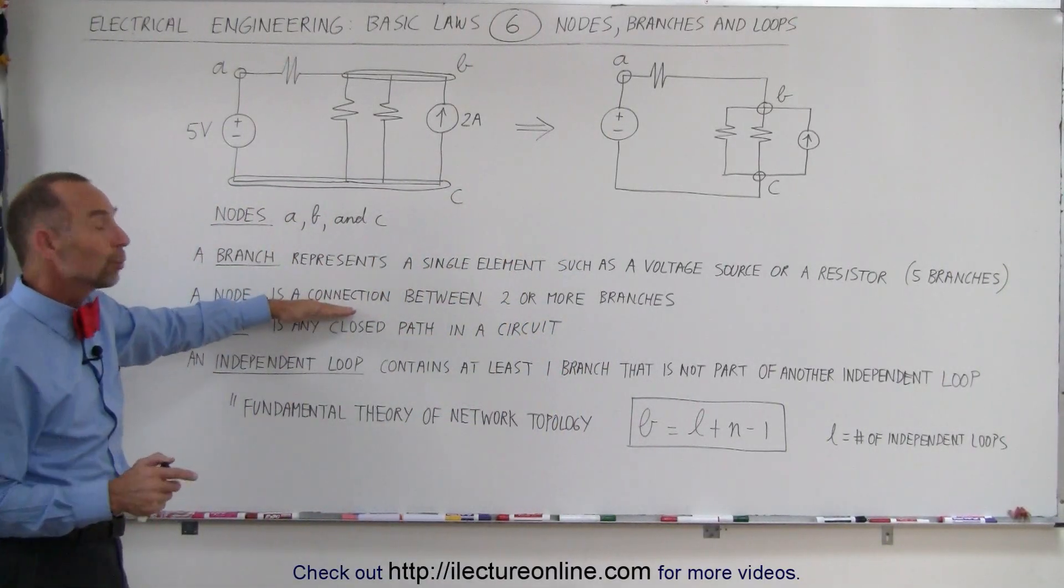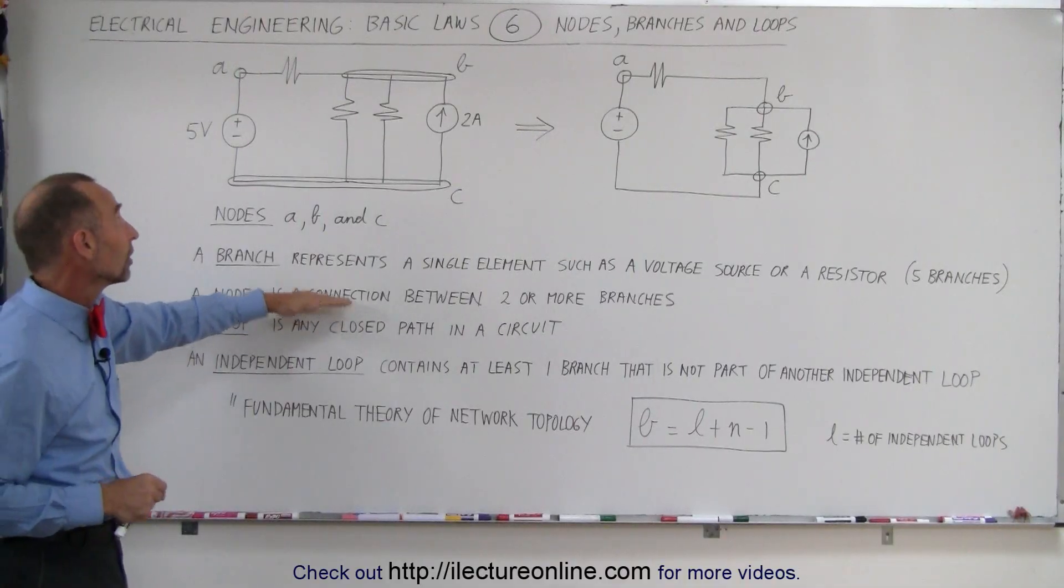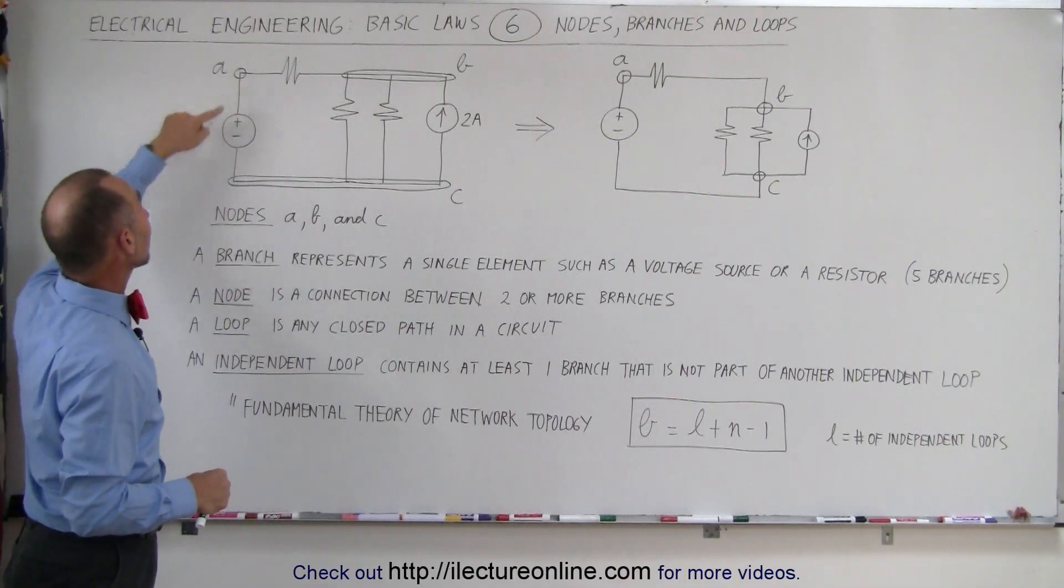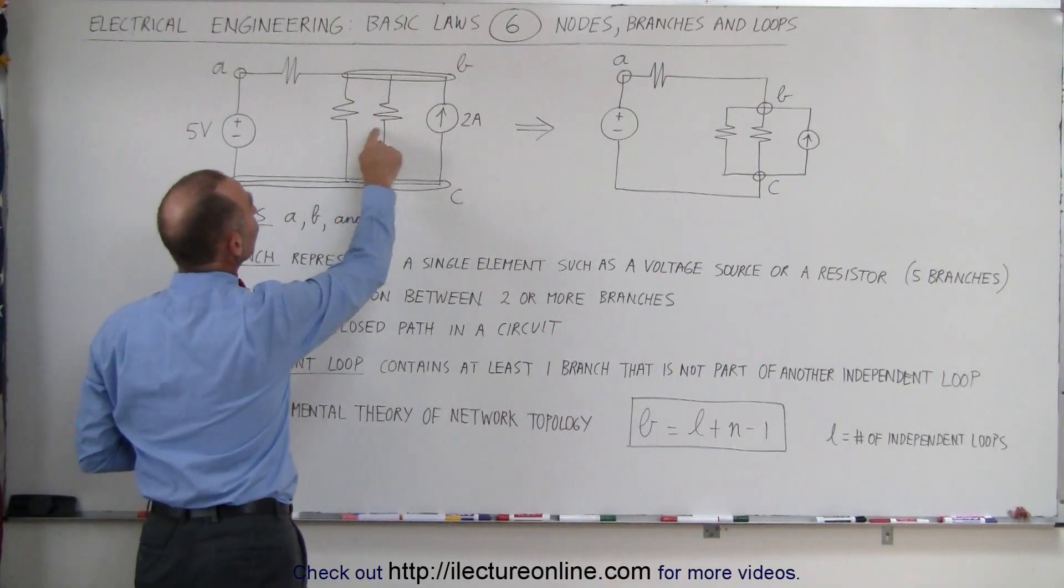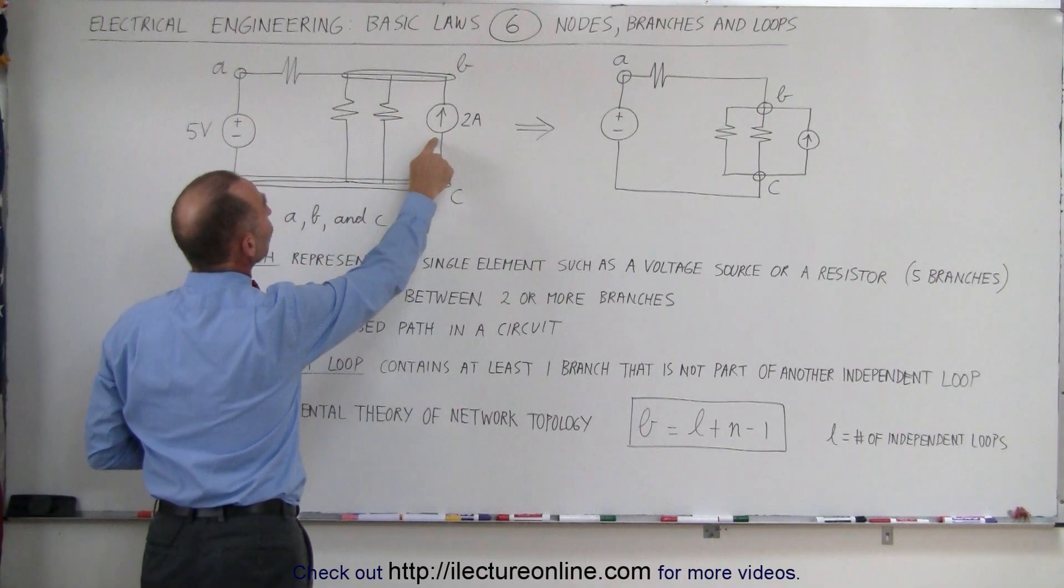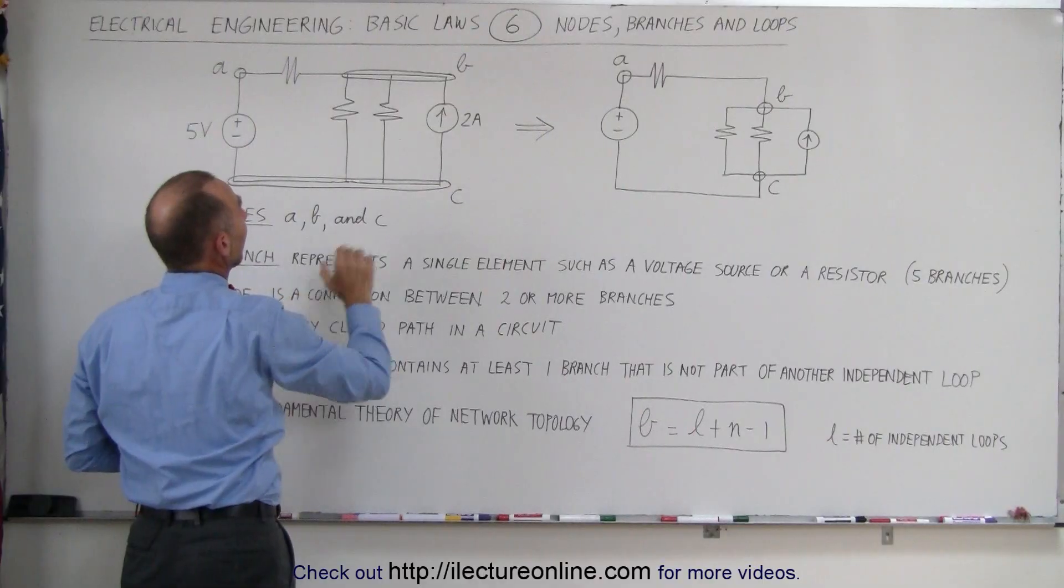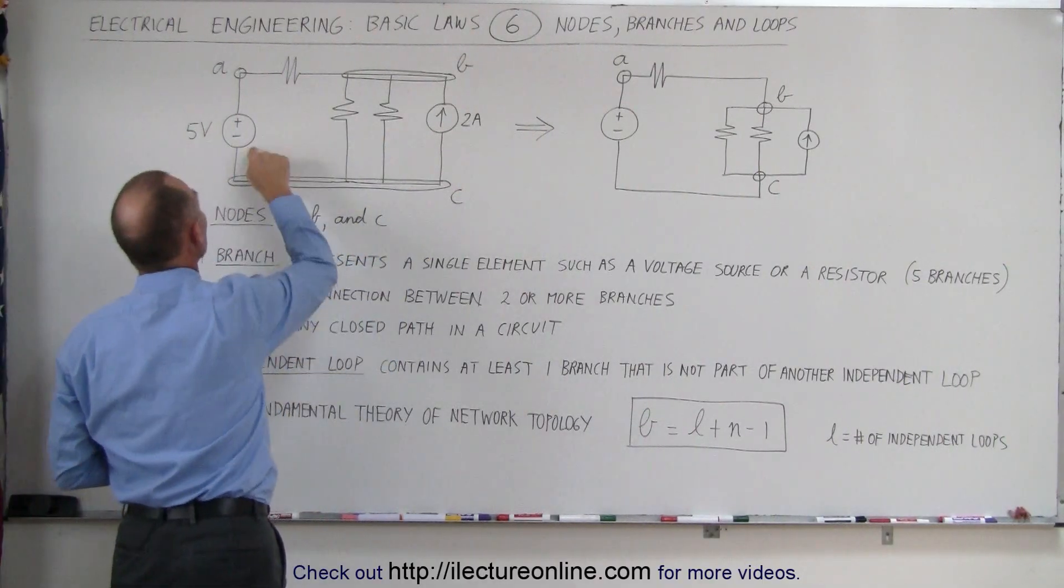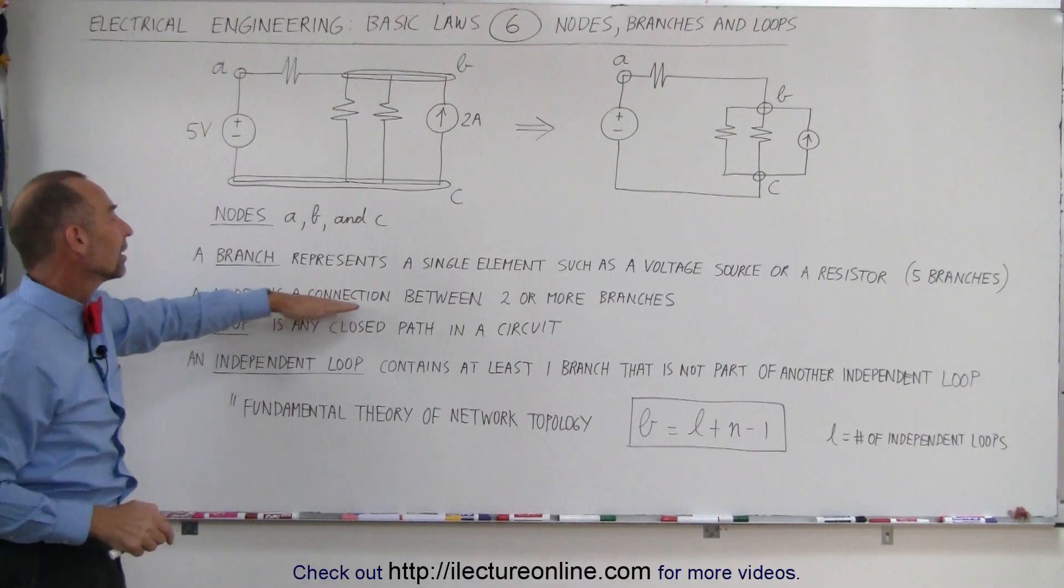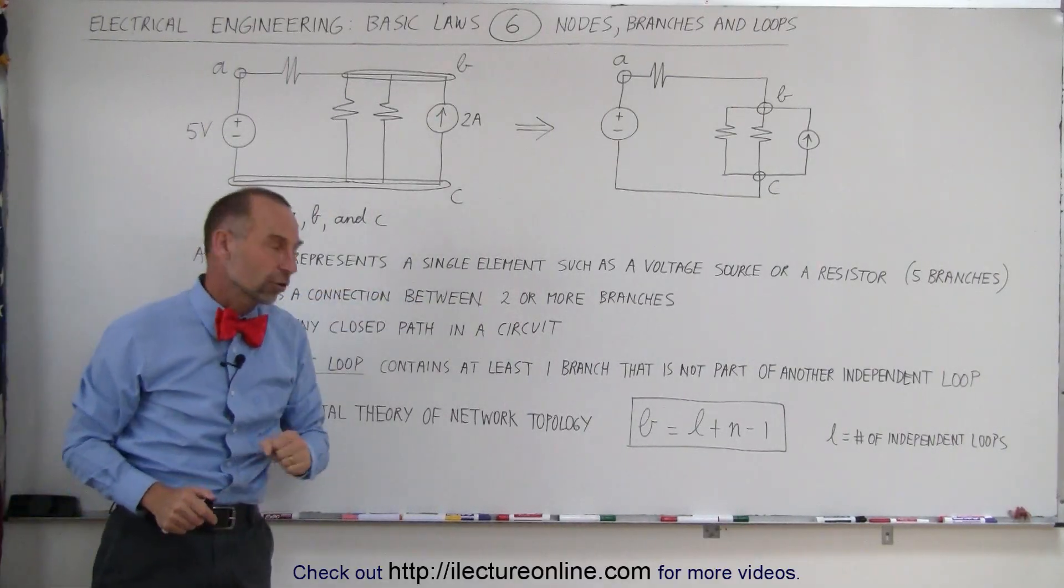A node is a connection between two or more of those branches. Here we can see that node A connects the voltage source to this resistor, node B connects those two resistors and this current source to this resistor, and node C connects these two resistors, this current source to this voltage source. Therefore a node is a connection between two or more branches.